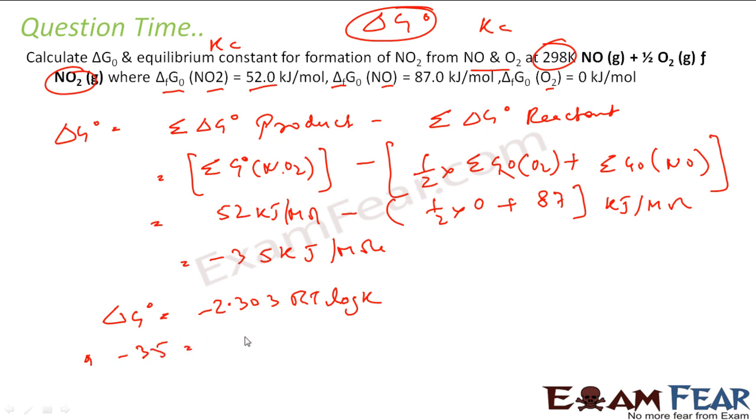So what is delta G naught? Minus 35 equals minus 2.303, R is 8.314, T is 298 kelvin, into log K, and this will be joule per mole per kelvin. So you solve this: minus minus cancel, you solve the whole thing, you get K to be 1.361 into 10 to the power 6.